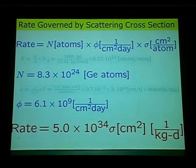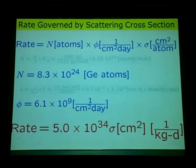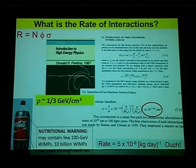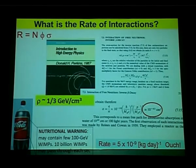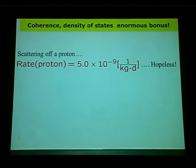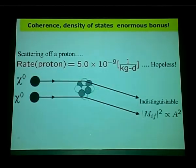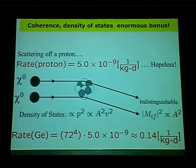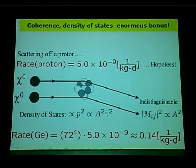Fortunately, physics is kind. These slow WIMPs don't interact with protons individually — they do it coherently. That coherence gives you a tremendous boost proportional to A², giving a more palatable rate of about one per 10 kilogram-years. The WIMP is moving slow — about 200 km/s, not relativistic — so it doesn't resolve individual nucleons and coherently scatters off them. That's something we can do in our lifetime.